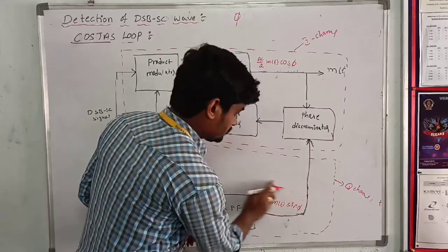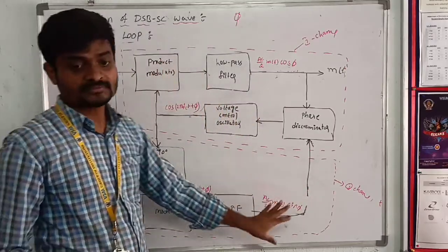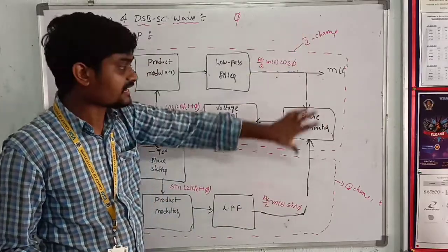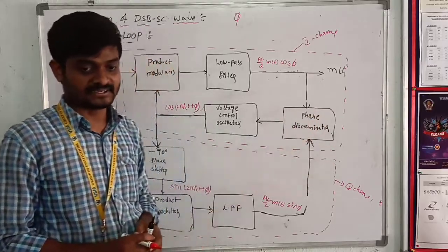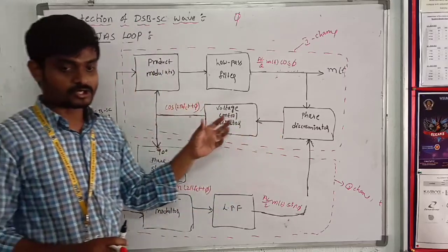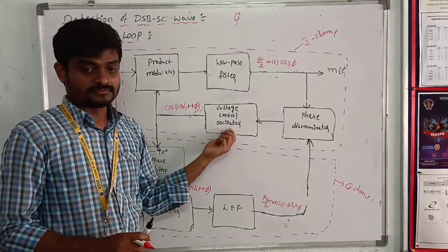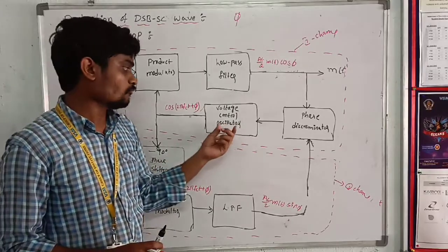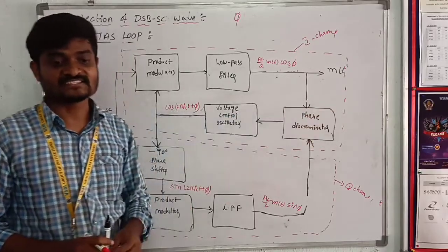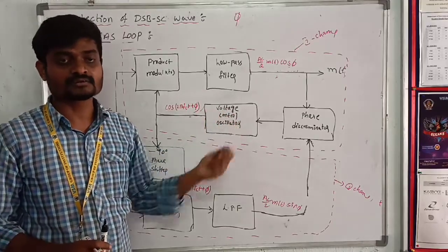The outputs of the Q channel and I channel are combined in the phase discriminator. A DC control signal is obtained that automatically corrects for local phase error in the voltage controlled oscillator.